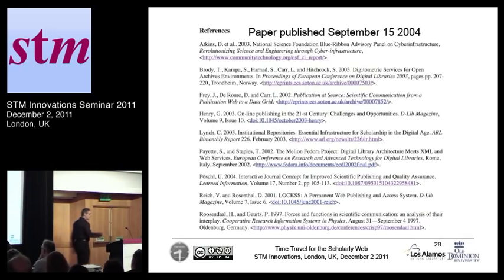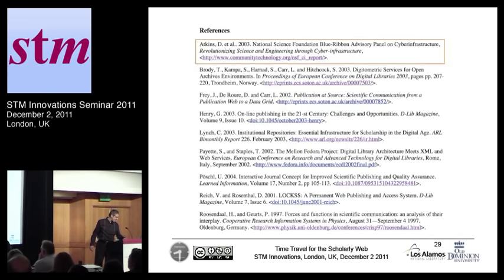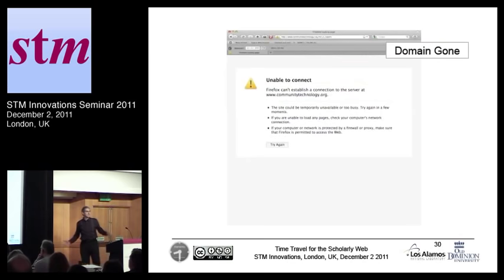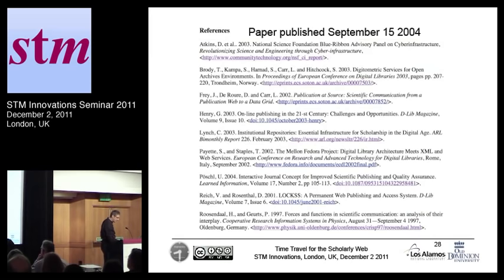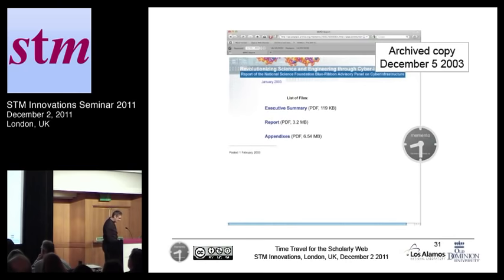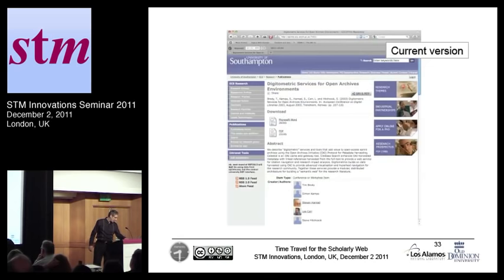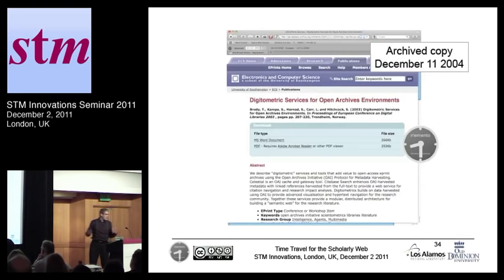The first citation is Dan Atkins' Cyber Infrastructure Report. I dereference that and the domain is gone. But using Memento, we end up in a web archive with a version from December 2003 — remember this paper was published somewhere in 2004. The next one is Tim Brody, something from the Southampton group. This is the current version and it's still there, so the link works. But I want a version from the time of publication. Using Memento, I get an archived copy out of the Internet Archive.